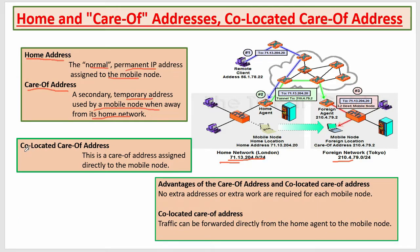Co-located care-of address means the care-of address is assigned directly to the mobile station. Normally, any message sent is first sent to the home agent. If our mobile is at the home network we receive it there; if we are in a foreign network, our home IP does not work, so we are assigned a temporary address related to that area. Messages travel from the home agent to the foreign agent, and then the foreign agent forwards them to the mobile node.